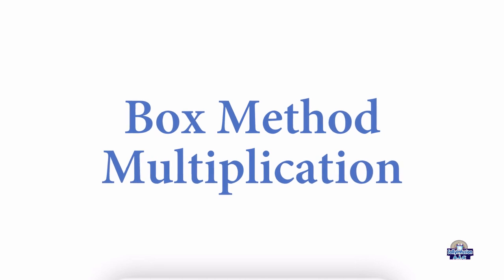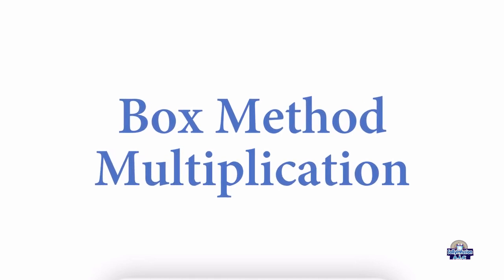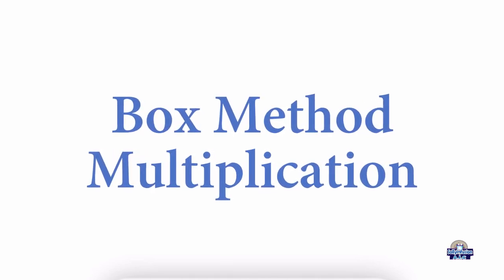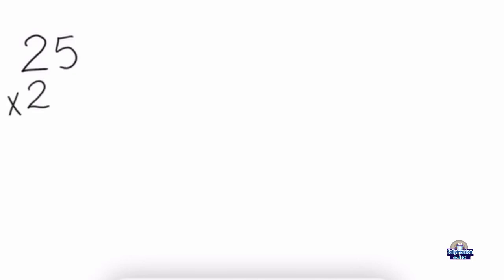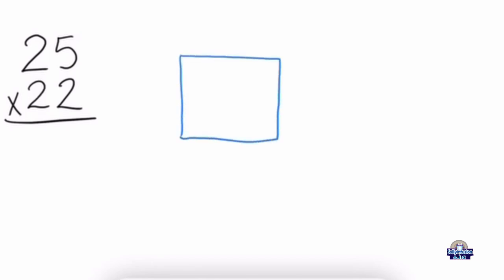Hello everyone, today we're going to do multiplication using the box method. We're going to do a two-digit multiplication: 25 times 22. When doing two-digit multiplication using the box method, we're going to draw a box and divide it into four parts.